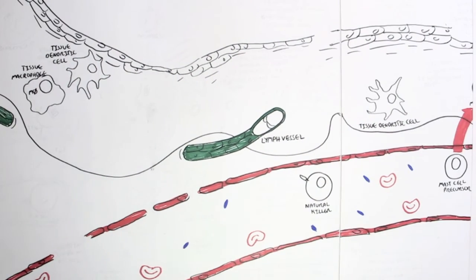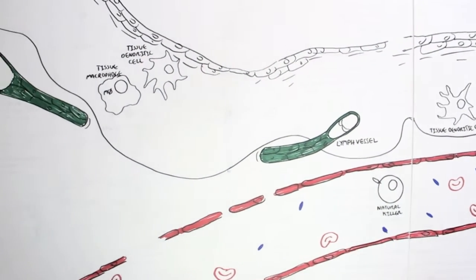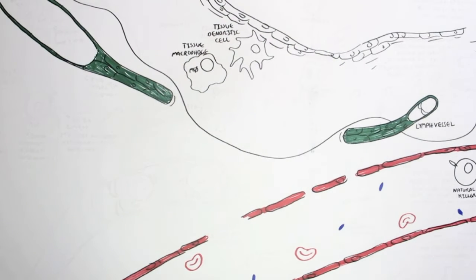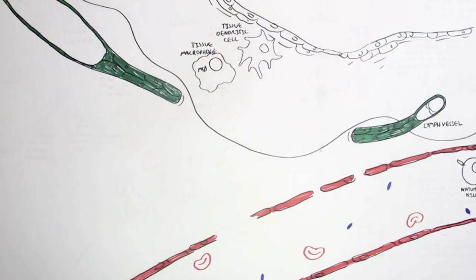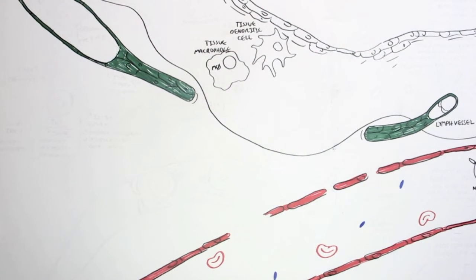The lymph vessel has a critical role in the immune system in that it actually transports activated T cells and B cells around the body.